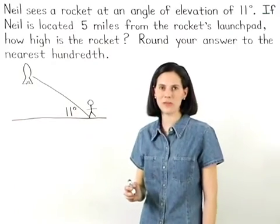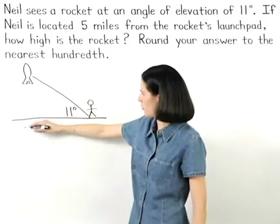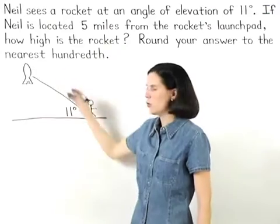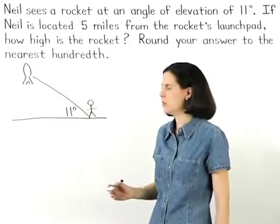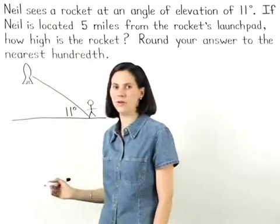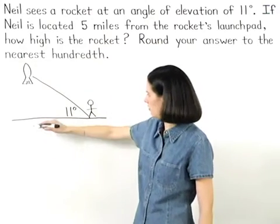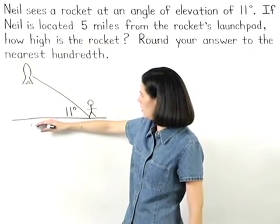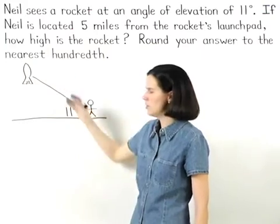Notice that an angle of elevation is formed from the ground upward where one side of the angle is the horizontal segment along the ground, and the other side of the angle is rotated 11 degrees upward from the ground.